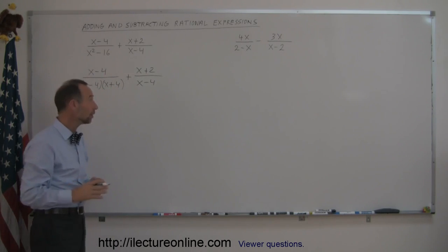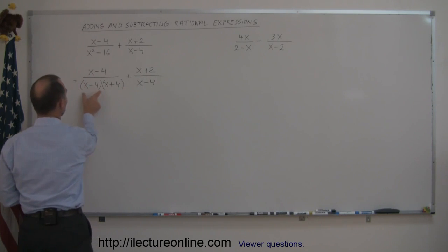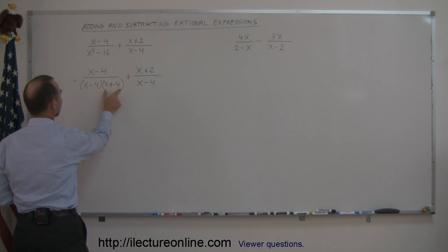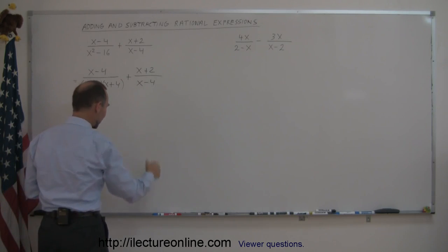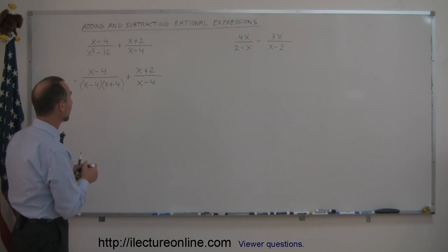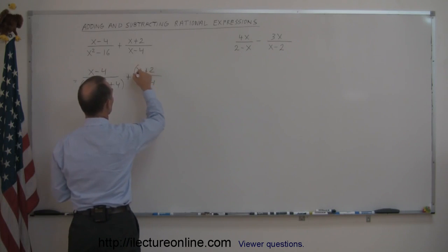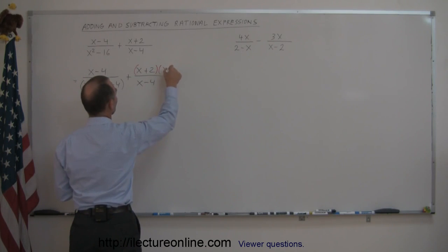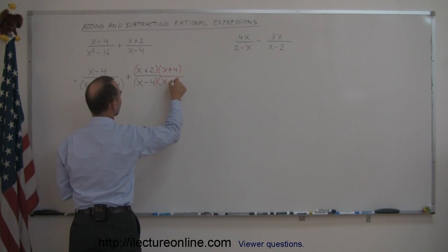Now you look and you see that you have an x minus 4 here and an x minus 4 there, but you don't have the x plus 4 over here. So to get that, you're going to multiply both the numerator and the denominator by (x + 4).